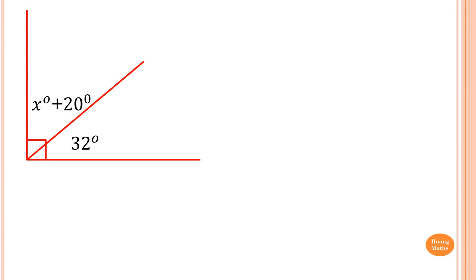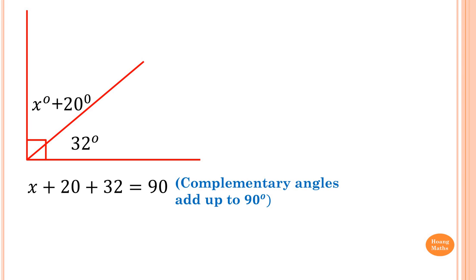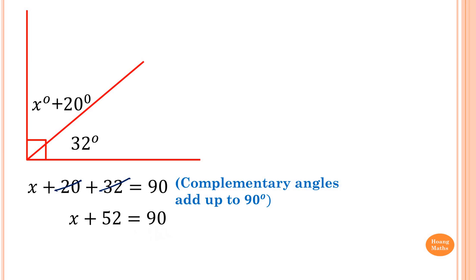Second example — complementary angles again. So x plus 20 plus 32 is equal to 90. The reason is: complementary angles add up to 90 degrees. So 20 plus 32 is 52, meaning x plus 52 is equal to 90 degrees. We minus 52 on both sides to get rid of the 52. So 90 minus 52 is 38. Therefore, x is equal to 38.